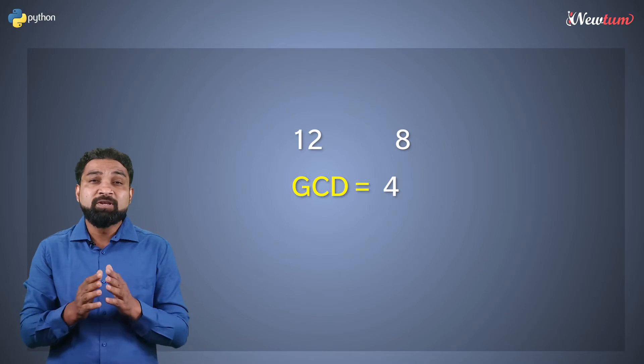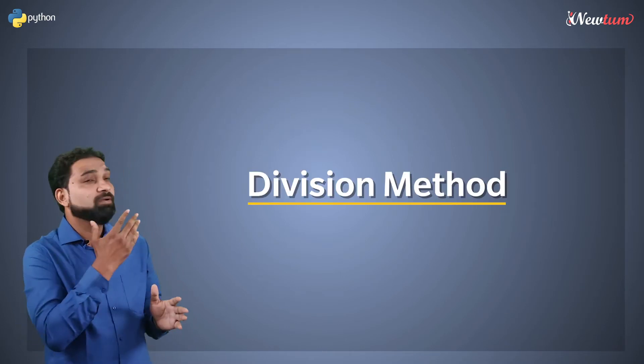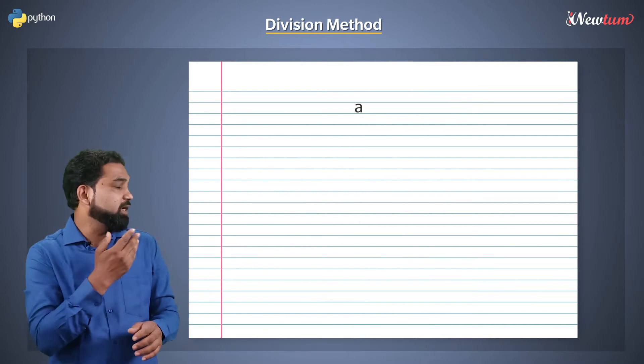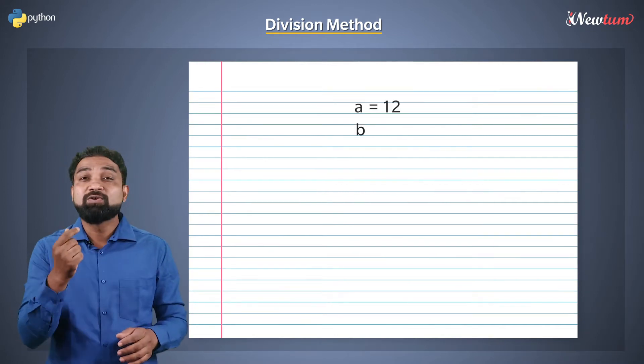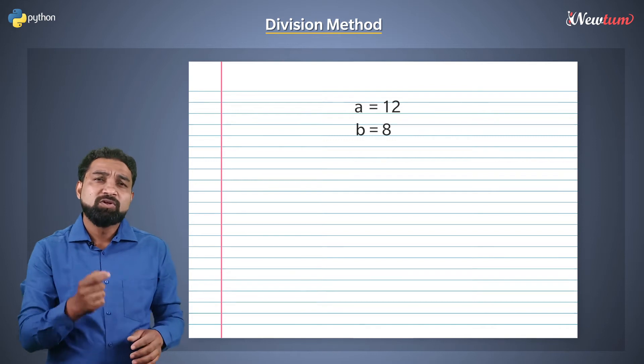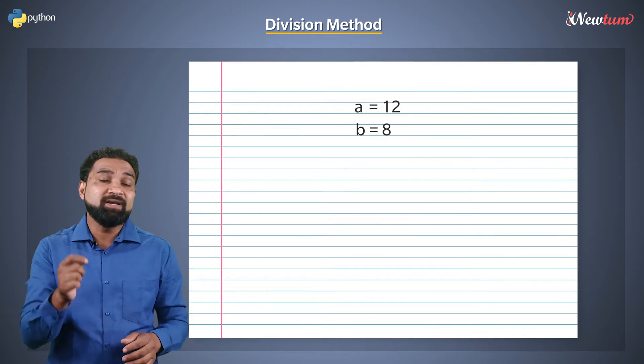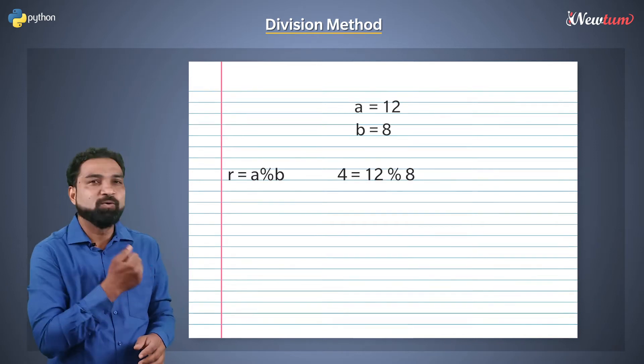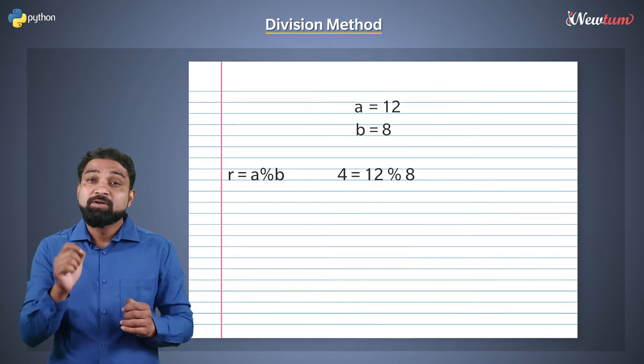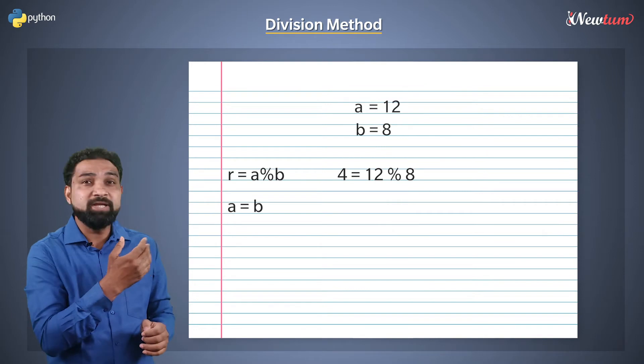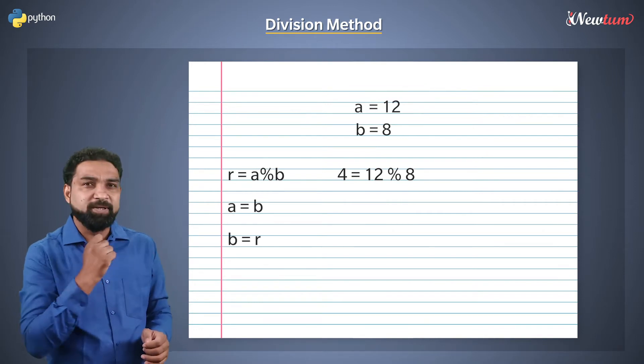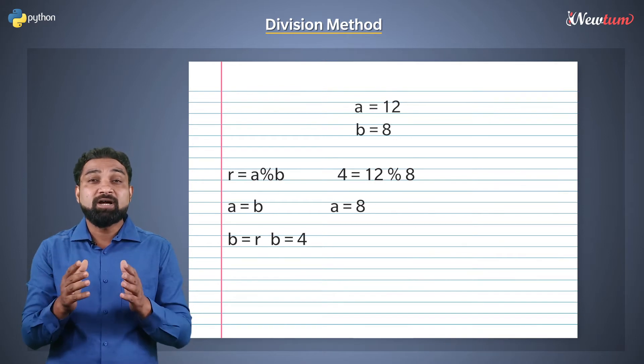To get the GCD, we will use a method called the division method. Suppose we have two numbers a and b with values 12 and 8. First, we divide a by b; the remainder will be 4. Then we assign the value of b to a and the value of r to b. These are updated values of a and b.